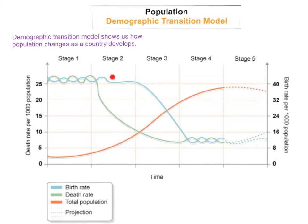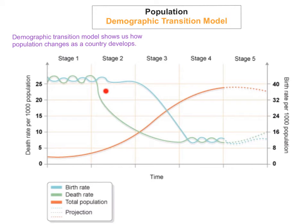In stage 2, the death rates will start to slow down a bit — the green line starts to slow down a bit. But birth rates will still remain very, very high. If there's a very high birth rate and the death rates have slowed down a lot, what's going to happen is the population starts to increase. There's a lot more people being born than are dying. Therefore, the population will increase.